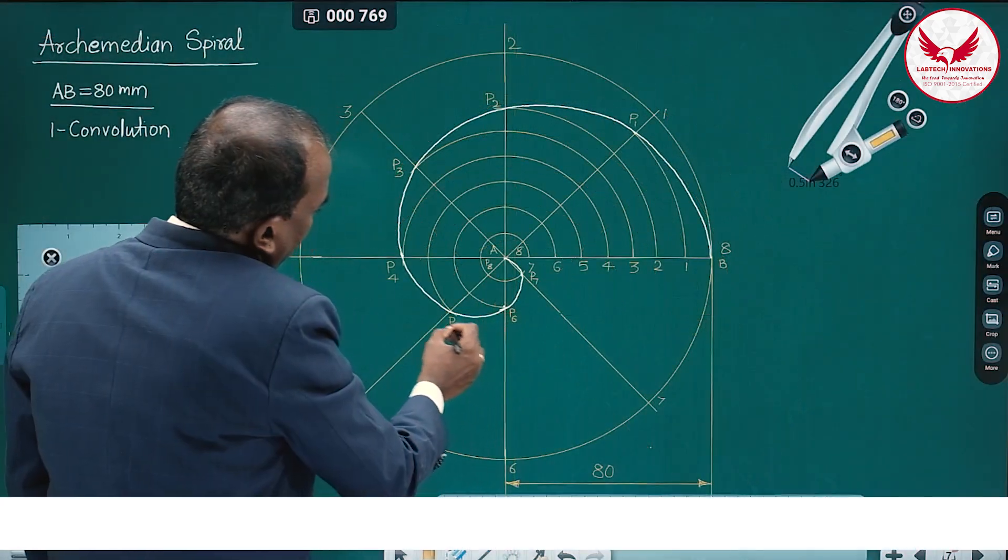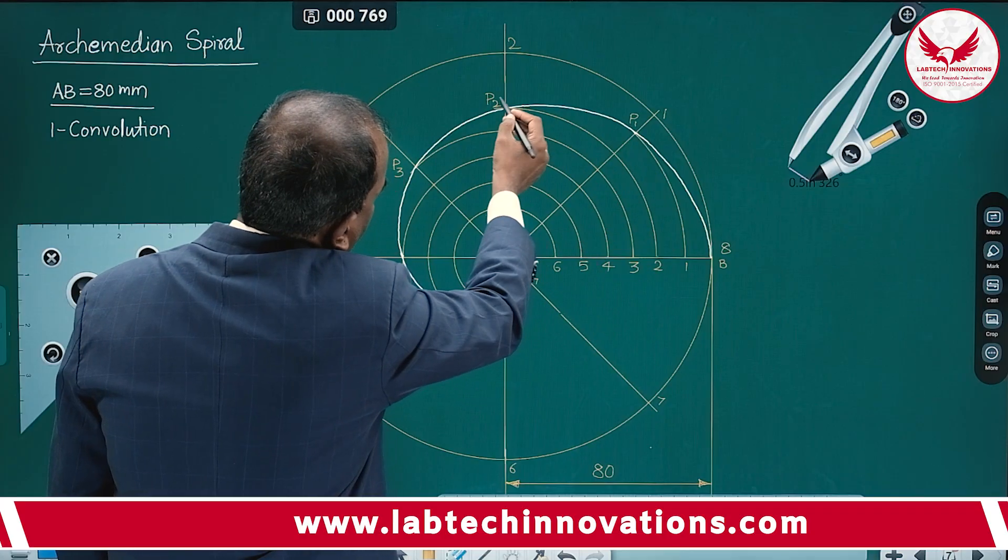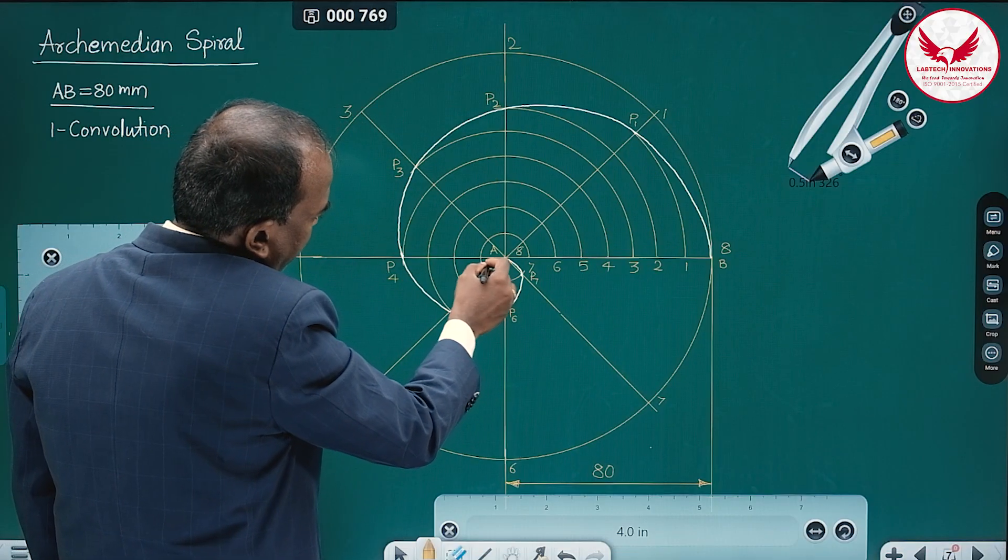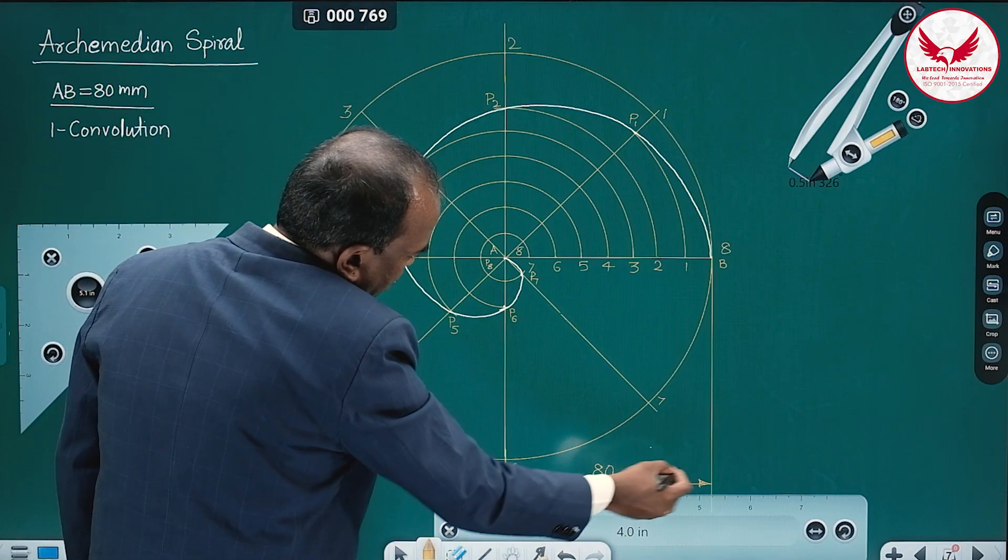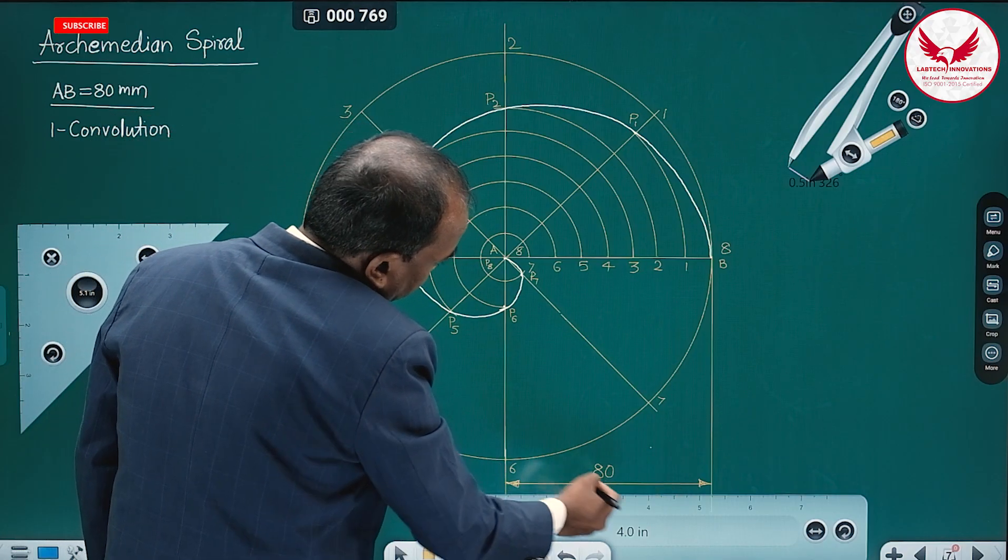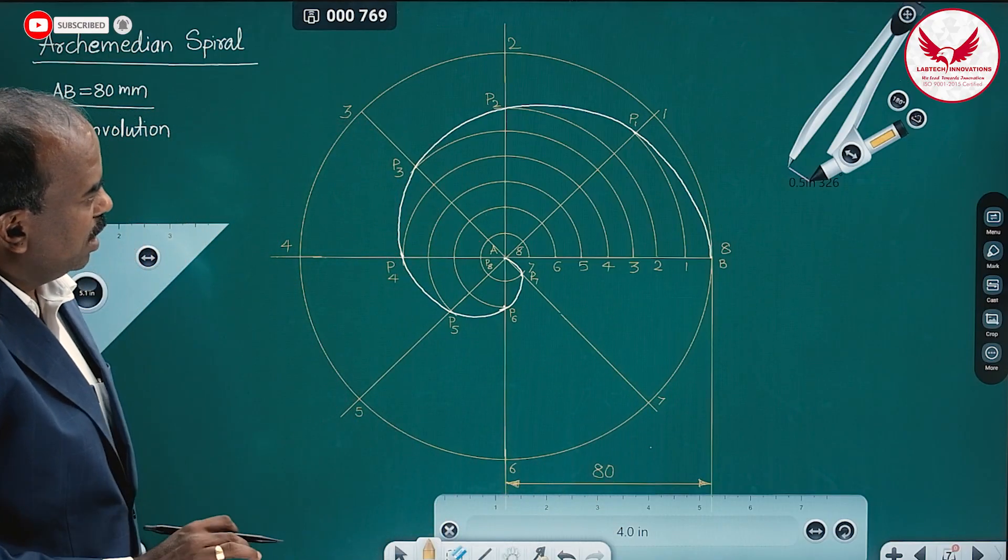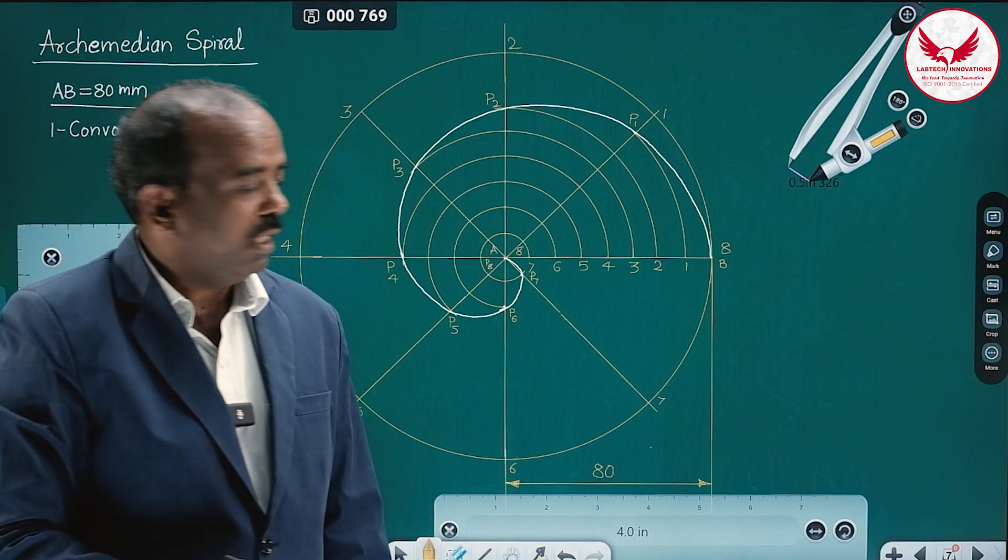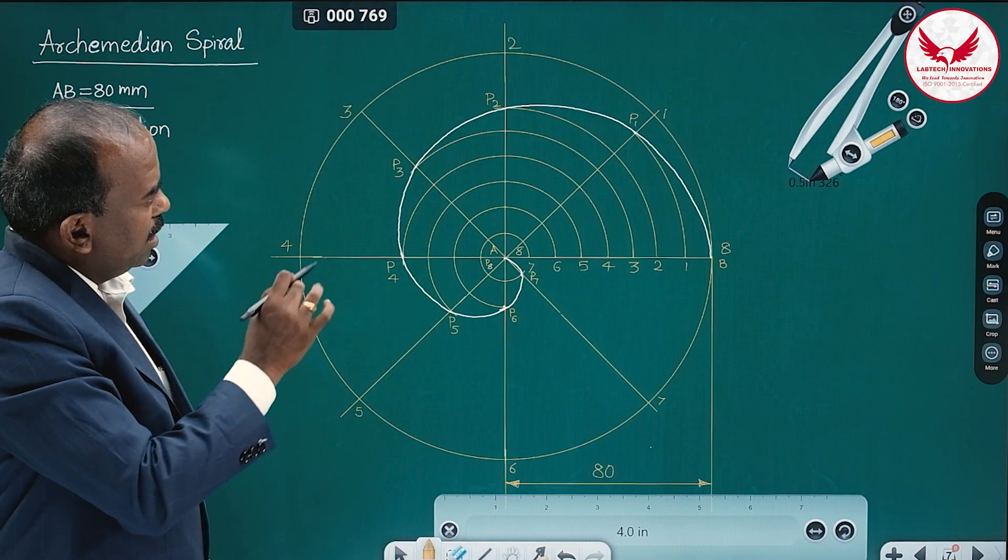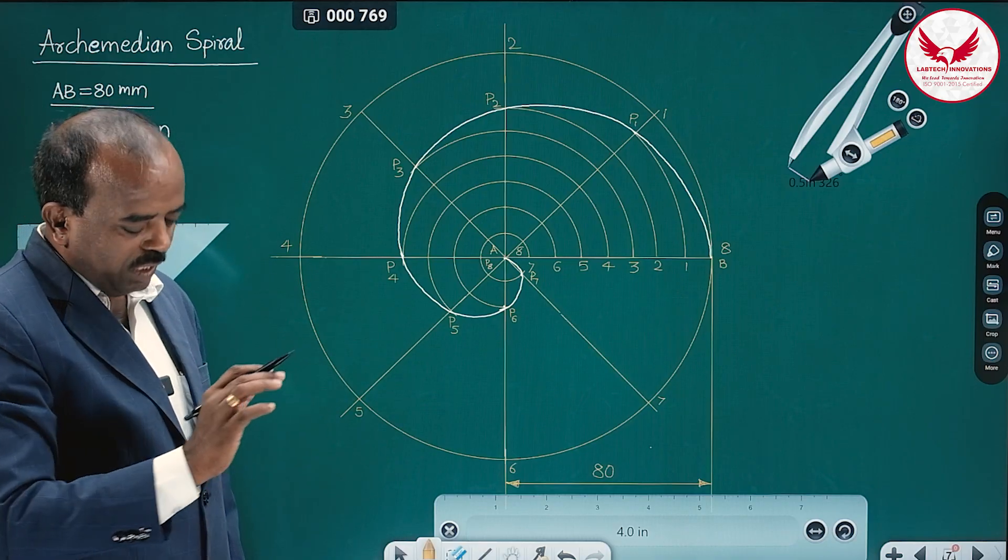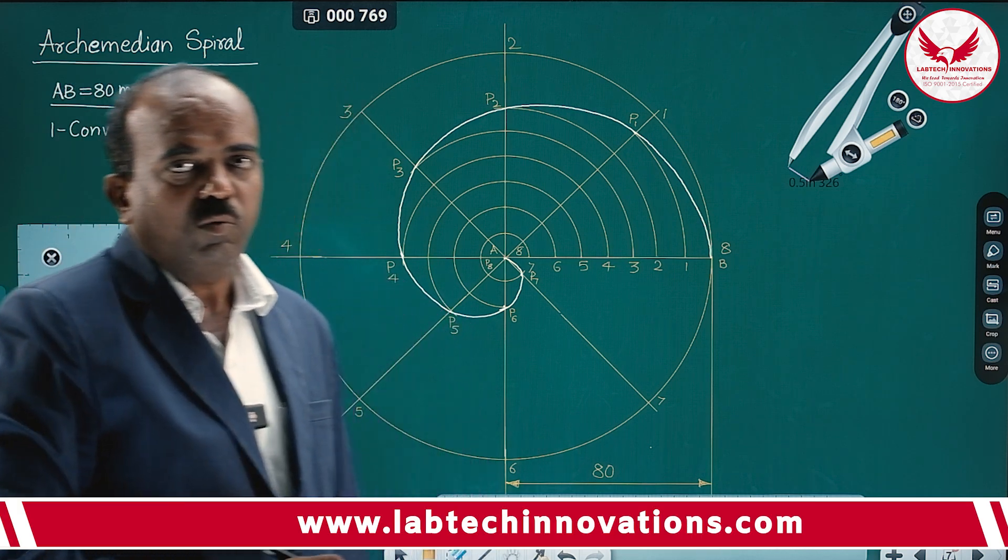And draw the smooth curve passing through these 8 points. Then name the points P1, P2, P3, P4, P5, P6, P7, P8. And the most important thing is dimensioning. That AB distance is nothing but 80. Dimensioning is very important, naming is optional. And only in your drawing, that curve should be dark. Draw with free hand with concentration, we will get the smooth curve. So it is the Archimedean spiral of one convolution.